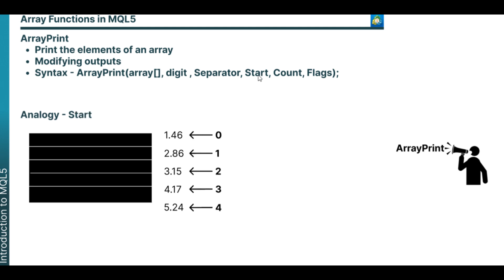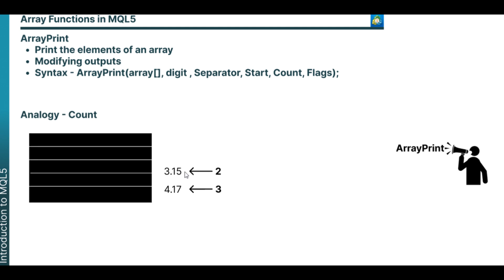The next parameter is the start. What start does is that you can specify the index you want the printer to start from. In this case, I want the printer to start from index 2. The next parameter is the count, which helps you specify the number of elements you want to print. The printing starts from the index you specified in the start parameter. Then lastly, the flag — I'll prefer to explain the flag with a practical example.